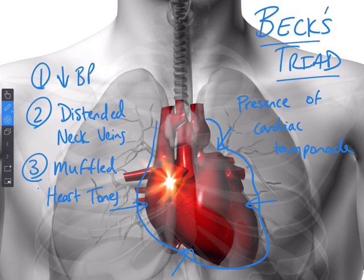The reason you see distended neck veins is because the fluid is essentially backing up and causing these veins to puff out. You hear muffled heart tones because there's extra fluid around the heart that you have to auscultate through when you put your stethoscope on their chest.